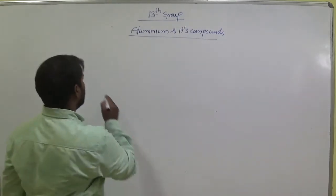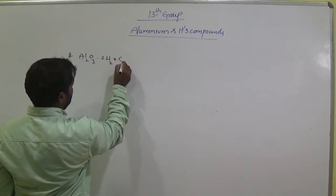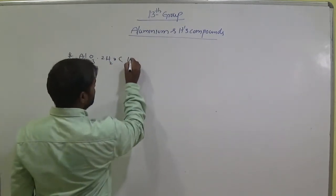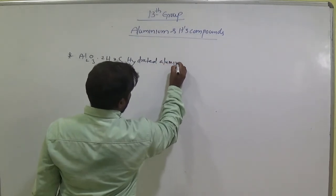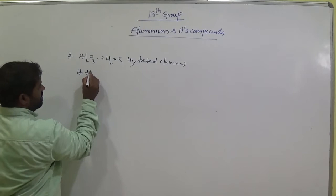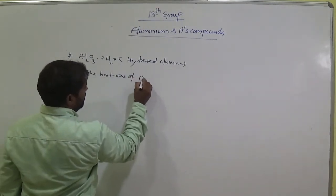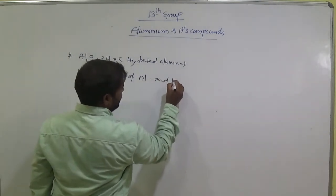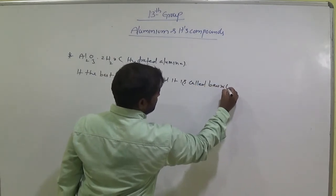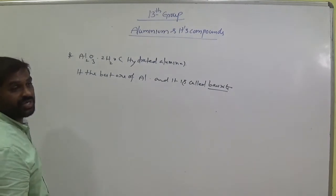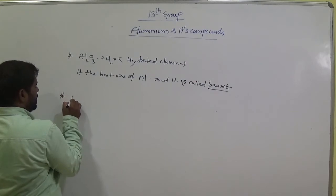And Al₂O₃·2H₂O, water molecule is there, so it is hydrated alumina. It is the best ore of Aluminium and it is called Bauxite. Al₂O₃·2H₂O is called Bauxite. This is the best source for Aluminium.